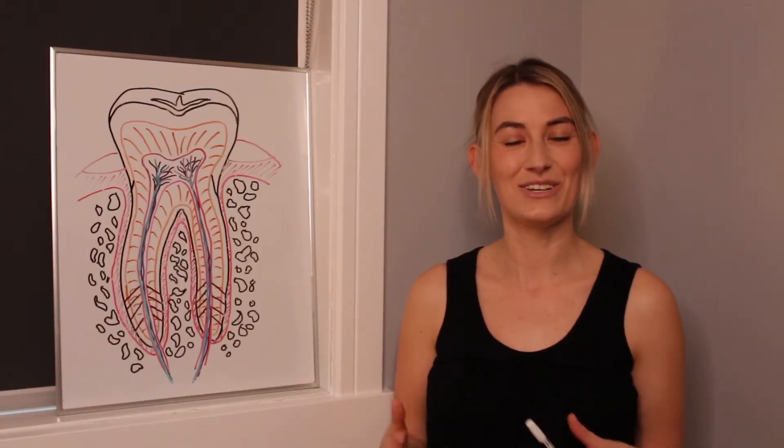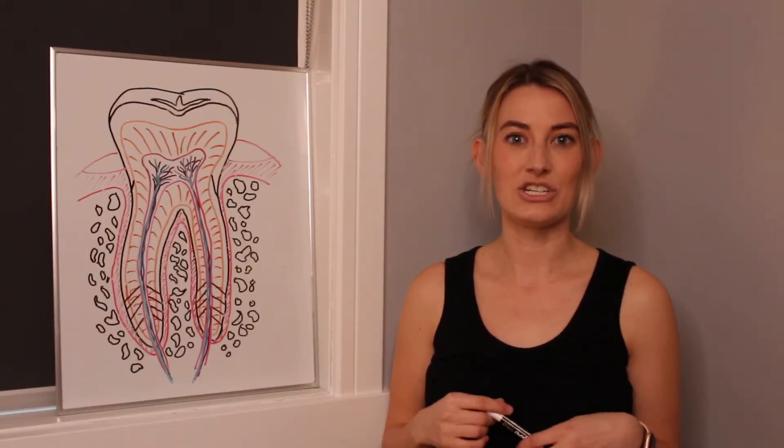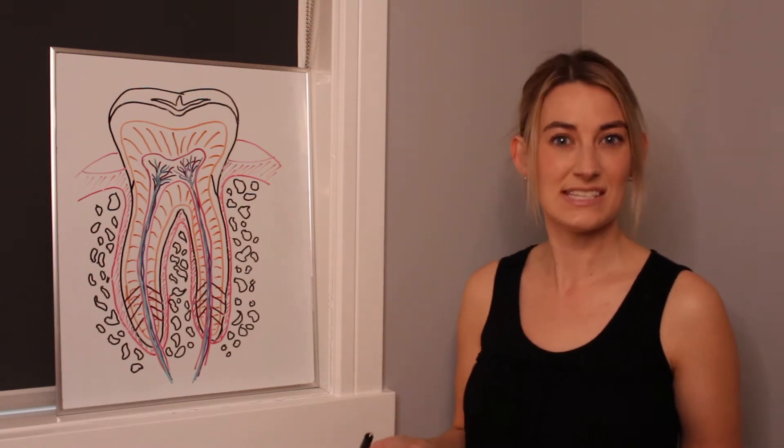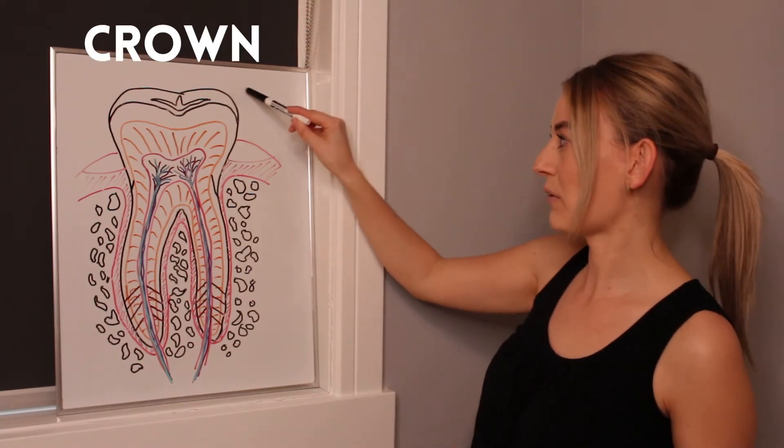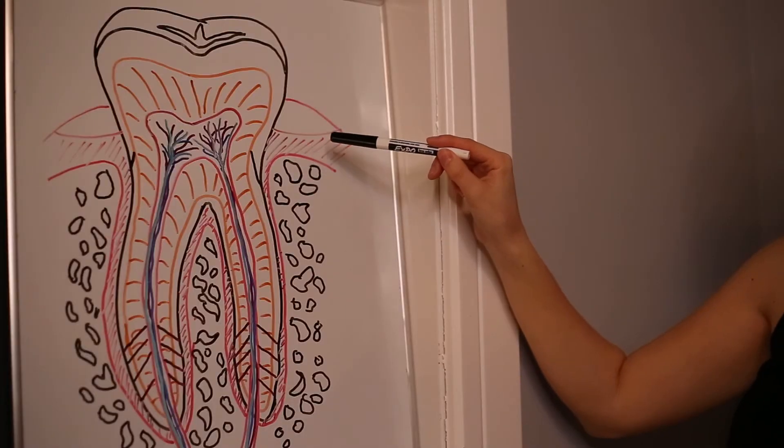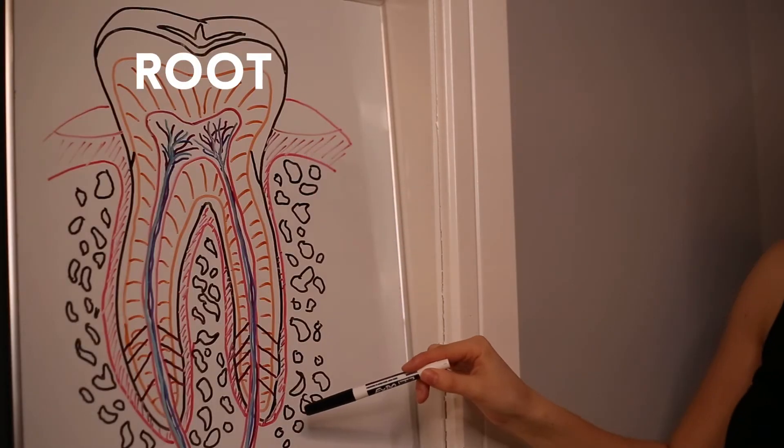So starting off, there is two different components to each tooth. The first part is the part that we actually see in our mouth. That's called the crown. That would be this top part here on this picture. The bottom part, this part here, this bottom half is the root.